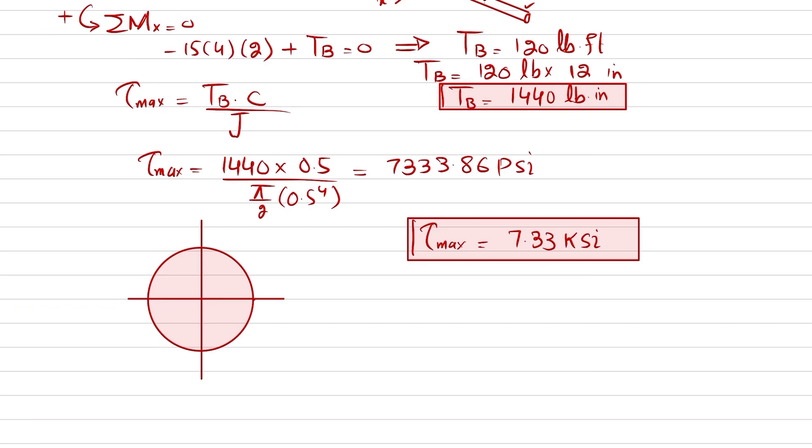Maximum shear stress at the outer surface will be the maximum, and at the center it will be zero. So the shear stress distribution will be linear, where the maximum stress at the outer surface is 7.33 ksi, caused by a torque of 1440 pound-inches.